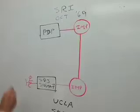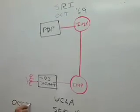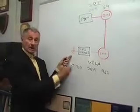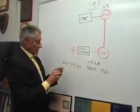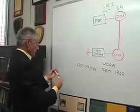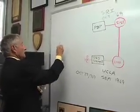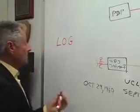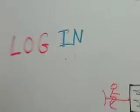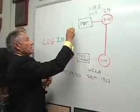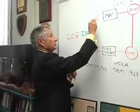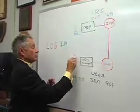On October 29th, 1969, one of my programmers, Charlie Klein, and I were in this room and we decided to log on to this machine. Now, to log on, one has to type in L-O-G, and the remote machine will type in the I-N. So our job simply was to type in L-O-G. Up at the other end, there was another programmer waiting to watch all of this, and we had a telephone connection between the two sites so they could talk to each other.